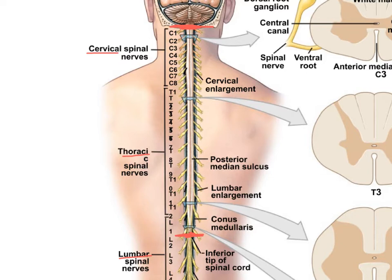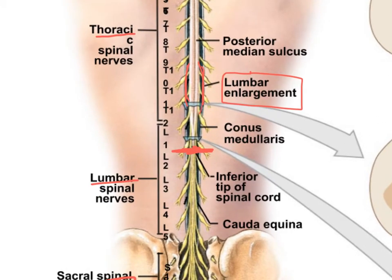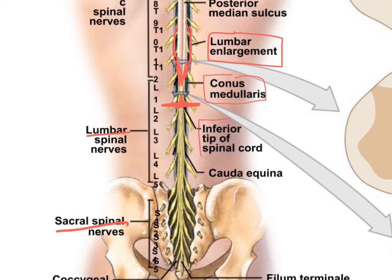On the spinal cord we can see this area here called the cervical enlargement - just a bulge in the spinal cord. A little bit lower we have the lumbar enlargement. At the very tip of the spinal cord it starts to taper down like a cone, and we call that the conus medullaris - that's where it's really tapering down to a point.